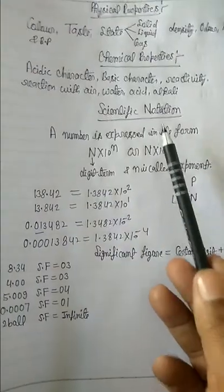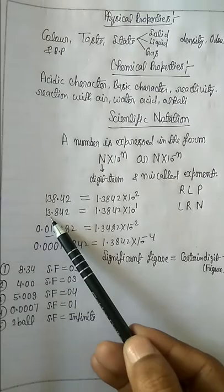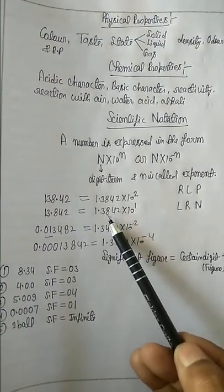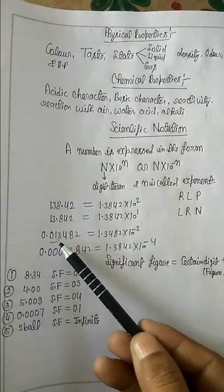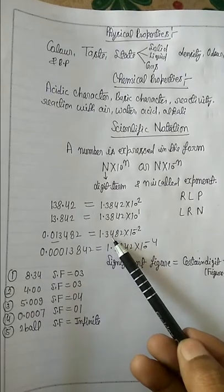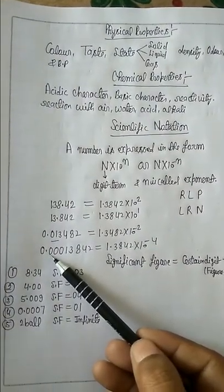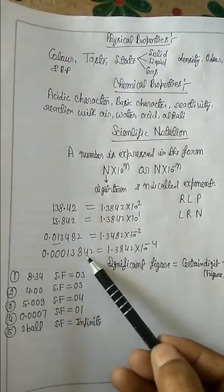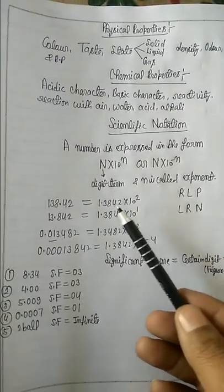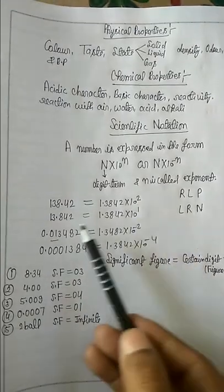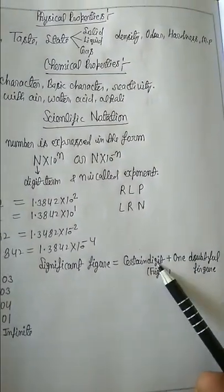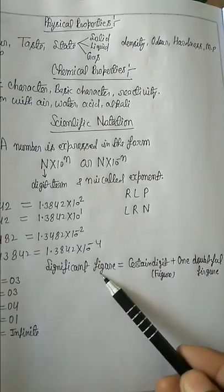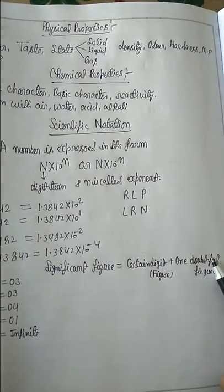Scientific notation means we write the decimal after one digit. For example: 1.3842 × 10^1, then 1.3842 × 10^-2, and 1.3842 × 10^-4, where we transfer the decimal 4 places. When transferring decimal from right to left, power of 10 is positive; from left to right, it is negative. Now, the sum of certain digits and one doubtful or uncertain digit is called a significant figure.